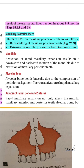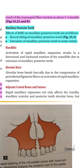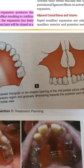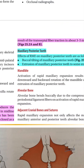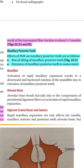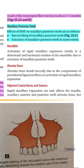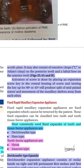Another effect of using RME appliances on the maxillary posterior teeth is buccal tilting of the posterior teeth, as well as some extrusion of the maxillary posterior teeth to some extent.